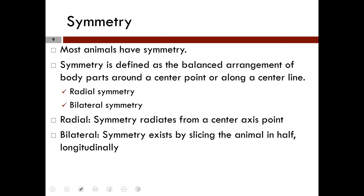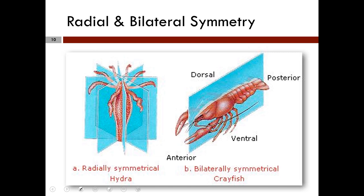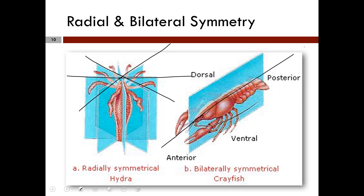Most animals exhibit symmetry. Symmetry is defined as a balanced arrangement of body parts around a center point or center line — a center point in the case of radial symmetry, and a center line in the case of bilateral symmetry. Radial symmetry radiates from a center axis point, as opposed to bilateral symmetry, where the animal can be sliced in half longitudinally. Here on the left we have a radially symmetrical hydra — you could cut it like a slice of pizza. On the right, a crayfish exhibits bilateral symmetry, which can be cut down the midline with the same structures on each side.